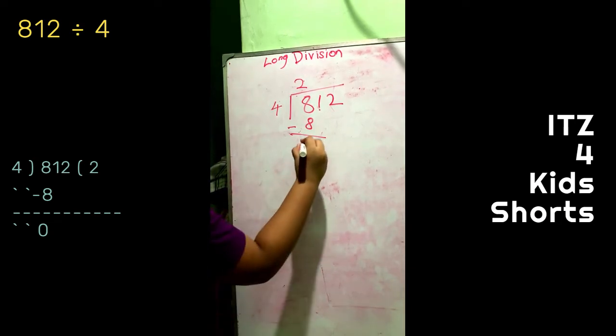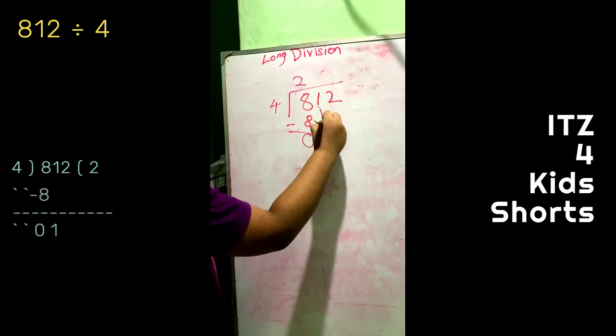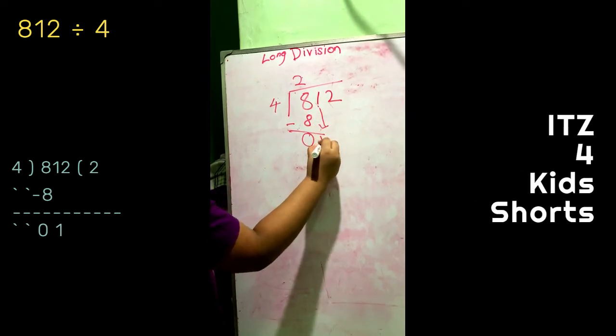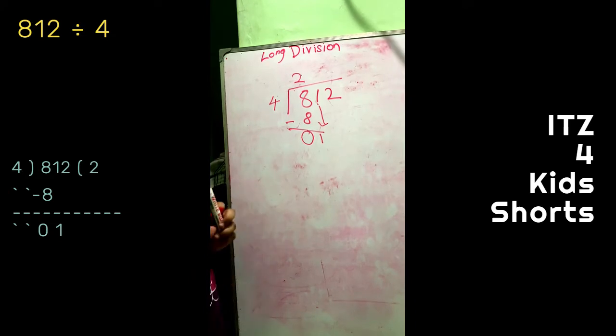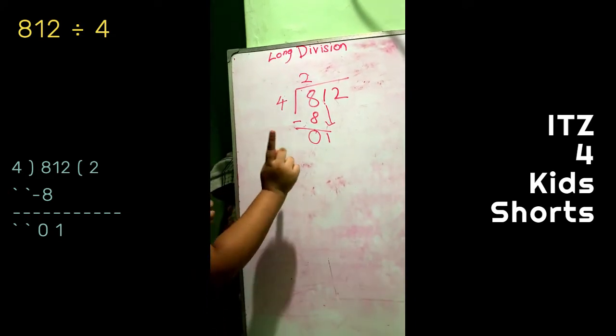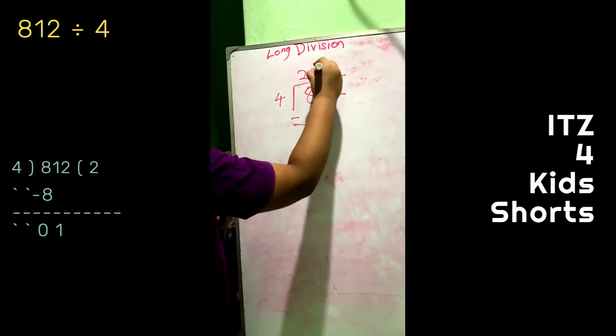Now bring the 1 down. Now it's 1. 4 cannot go into 1, so put 0 on top.